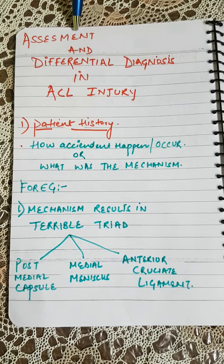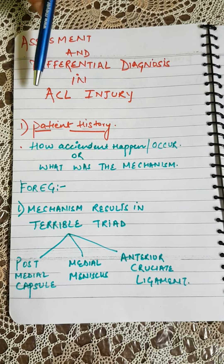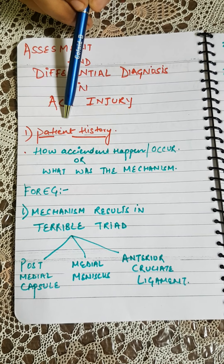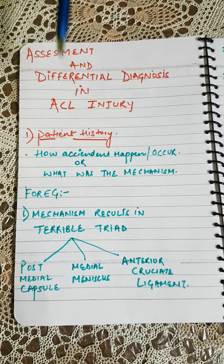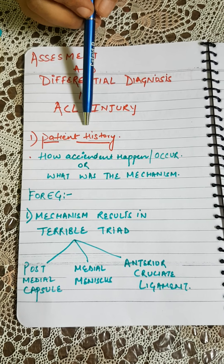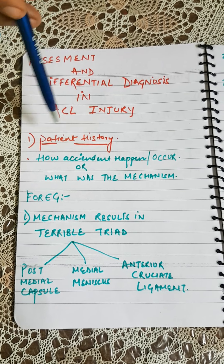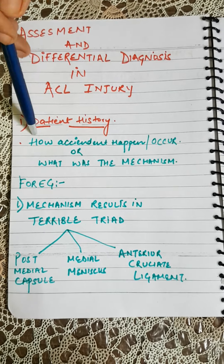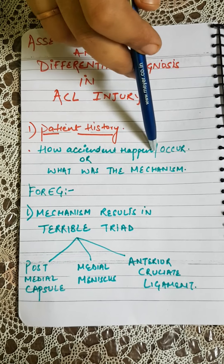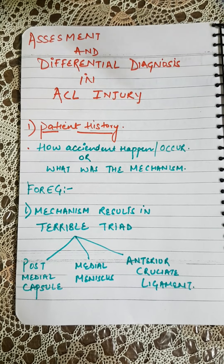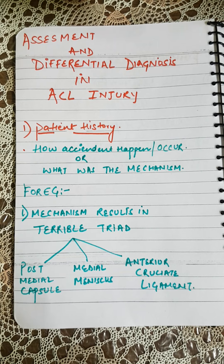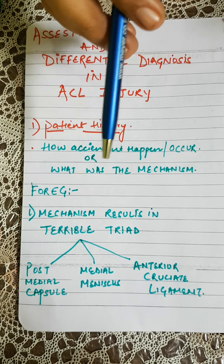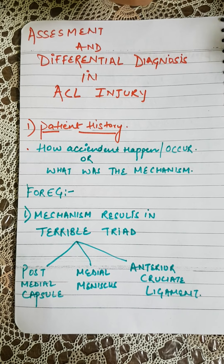First we will go with assessment, starting with patient history, which is a very important element in the entire treatment. Under patient history, the first question is how the injury occurred — the mechanism of injury. The primary mechanisms of injury in the knee are valgus forces with or without rotation, hyperextension-flexion with posterior translation, and varus force.